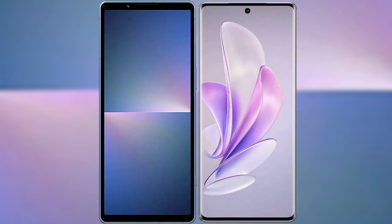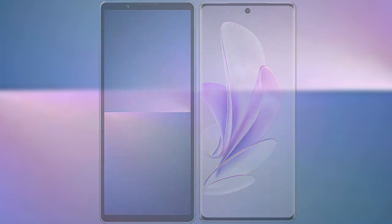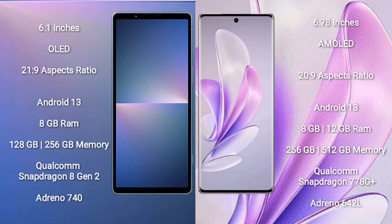I will compare the new Sony Xperia 5 Mark 5 with Vivo A70. Sony Xperia 5 Mark 5 comes with a 6.1 inches OLED display and aspect ratio 21:9. Vivo A70 comes with a 6.78 inches AMOLED display and aspect ratio 20:9.